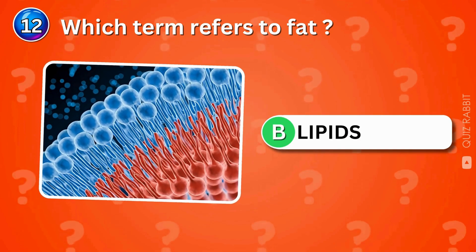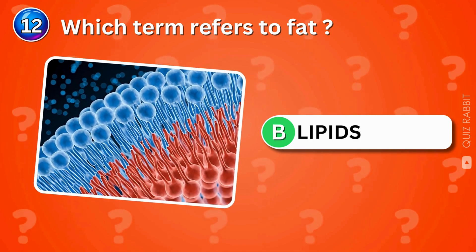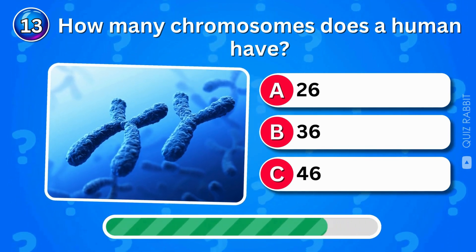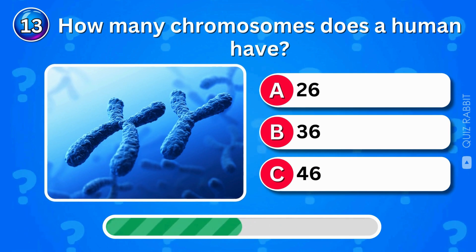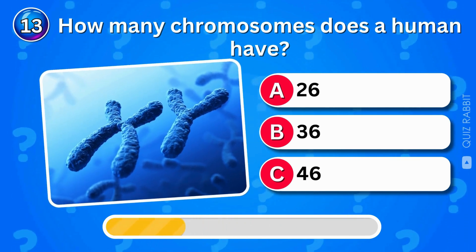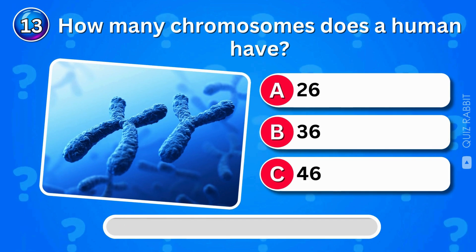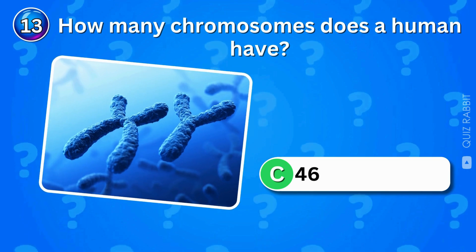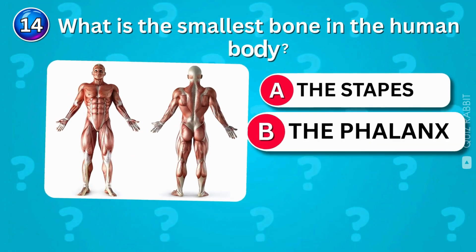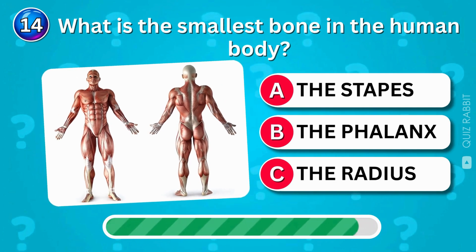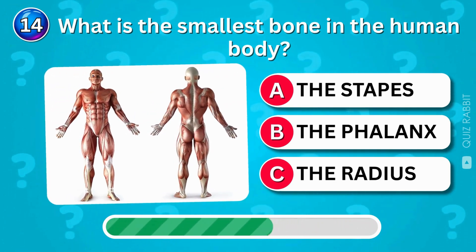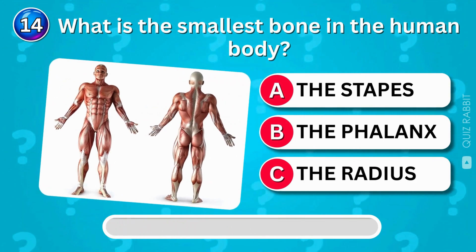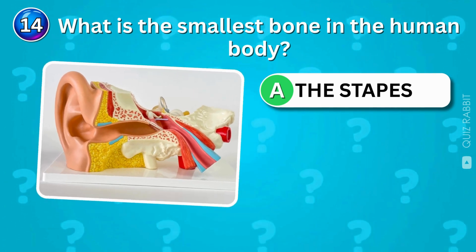Lipids refer to fat — your body's energy storage system. How many chromosomes does a human have? Humans have 46 chromosomes — that's 23 pairs, your genetic blueprint. What is the smallest bone in the human body? The stapes — it's deep in your ear, helping you hear.